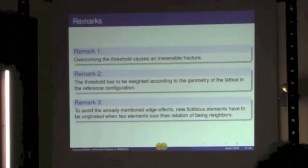Some remarks are needed to understand the model. One is that we use a model of an irreversible structure, which means that when two particles overcome the threshold distance, this is not a reversible process. So if in the evolution they come back near together, there will not be another bonding between them.